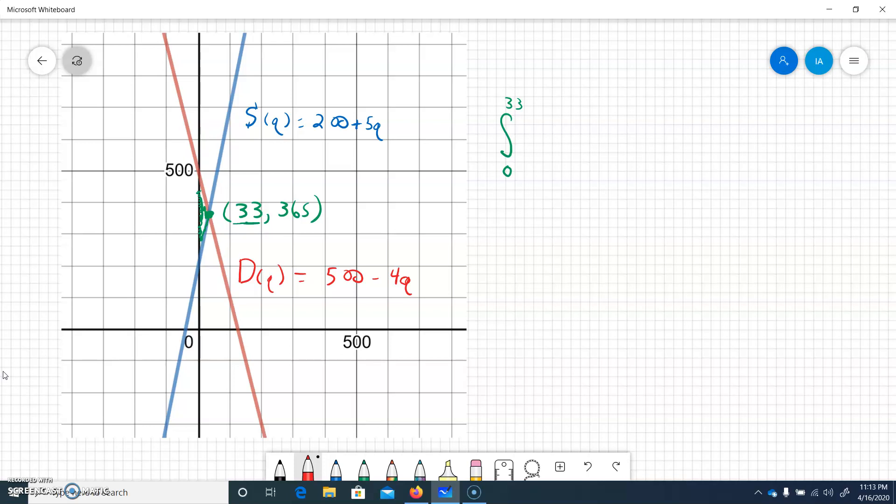So the demand is the top curve. That was 500 minus 4Q. And then we're going to subtract off the supply, 200 plus 5Q. And that would be in terms of dQ.